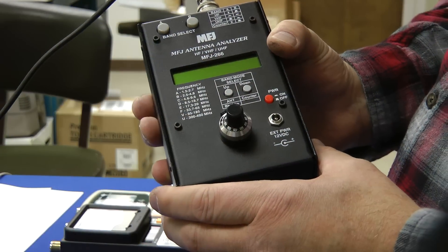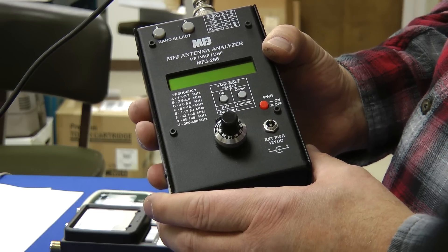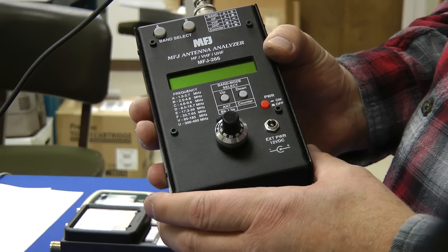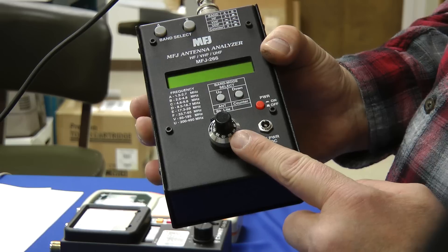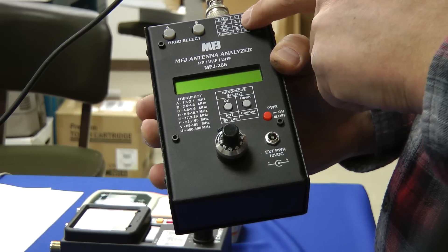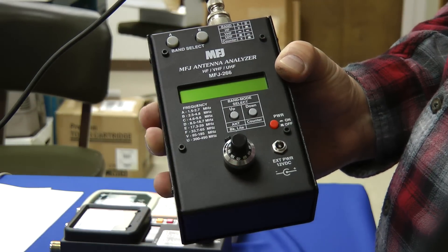Here's the MFJ model 266 antenna analyzer. It covers roughly 1.5 to 490 megahertz in several different bands. This is the power button, this is the tune control, select the frequency bands HF, EHF, UHF here, and the different frequency ranges over here.